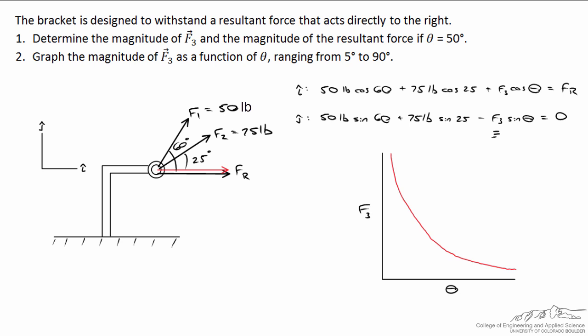If I take FR and pull this rope downward, if I pull it all the way down to 90 degrees, I would need much less force to counteract the vertical components of F1 and F2. So it's always important to think about the physical significance of your equations and whether or not the results make sense.